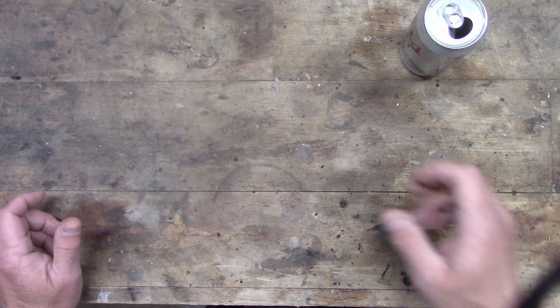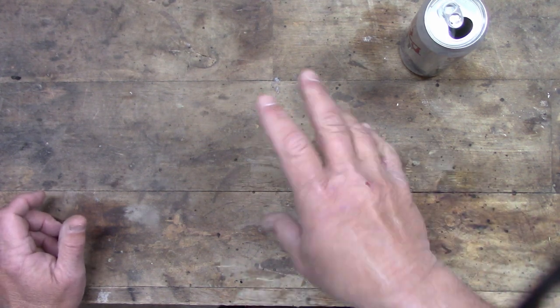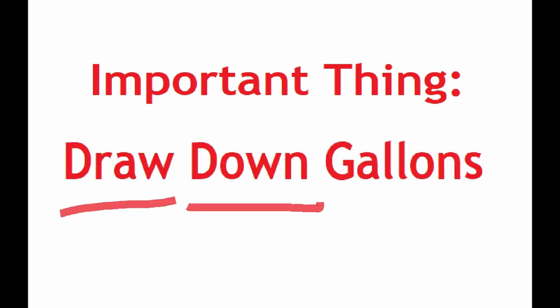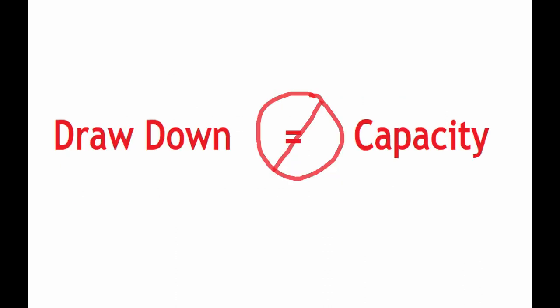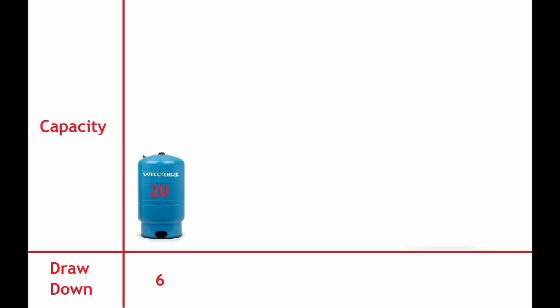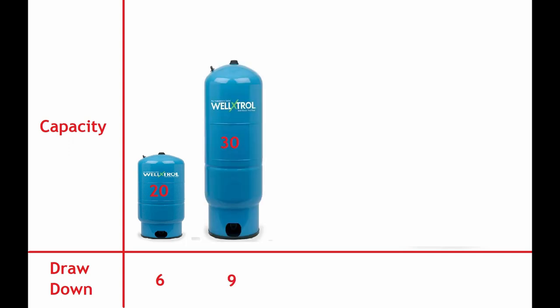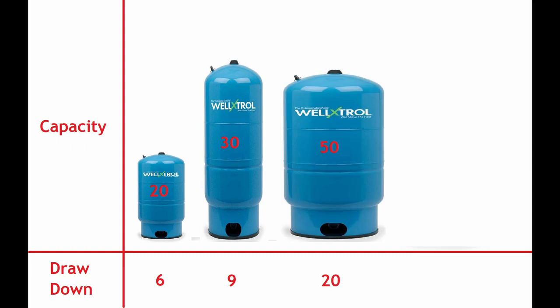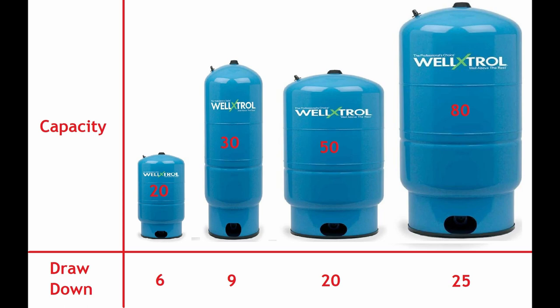Picking a tank can be a bit confusing, but there's an important thing you need to know: the drawdown gallons. Drawdown gallons is different than the tank's capacity. For example, a 20 gallon tank might have a six gallon drawdown, a 30 gallon tank might have a nine gallon drawdown, a 50 gallon tank might have a 20 gallon drawdown, and an 80 gallon tank might have a 25 gallon drawdown.